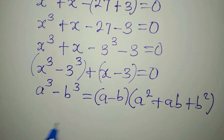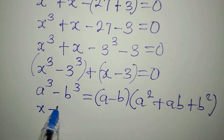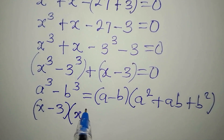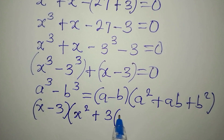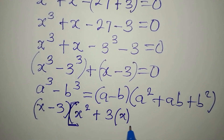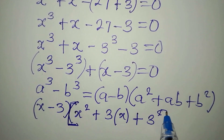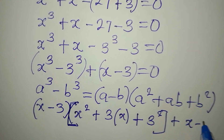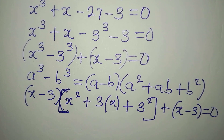In our case, a is x and b is 3. Substituting: a minus b becomes x minus 3, then into a squared plus ab plus b squared, that would be x squared plus 3 times x, which is 3x, plus b squared which is 3 squared. Then we still have plus x minus 3, and everything equates to zero.